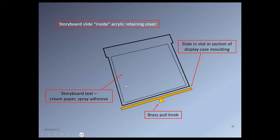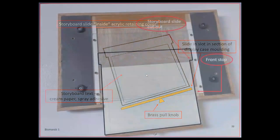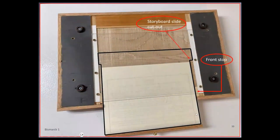The storyboard is spray-adhesive on cream paper underneath. And here shows it partially extended to give an indication of what would happen. As you pulled out the slide, that notch there would strike the front stop and would stop it going any further. There was, in fact, also a backstop along here.